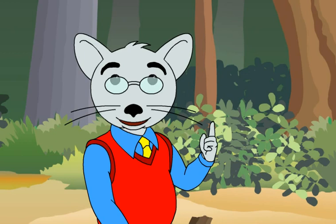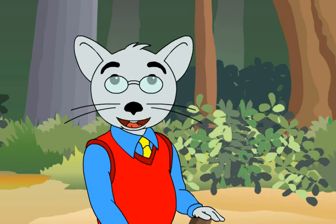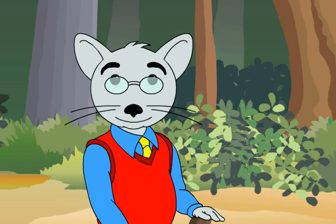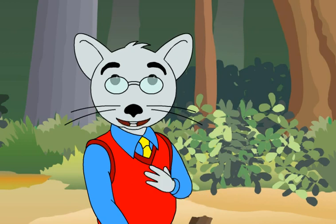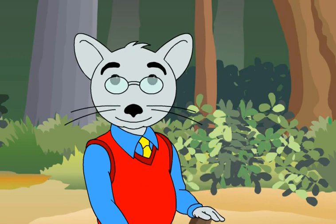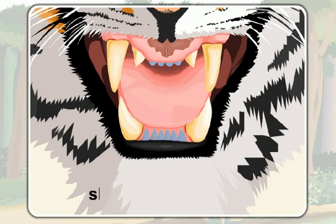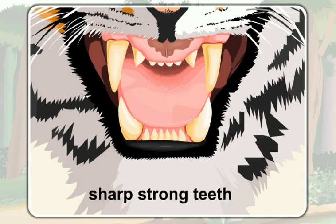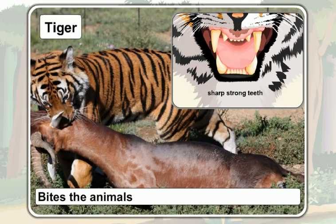Do you know how the tiger kills these animals? Well, let me tell you. A tiger has sharp, strong teeth in the front of its mouth. With the help of these sharp, strong teeth, a tiger first bites the animals on their necks and kills them.